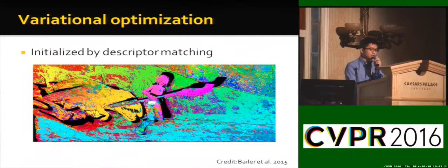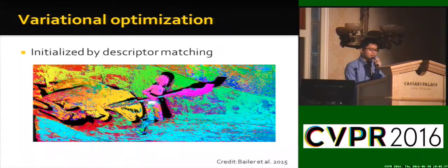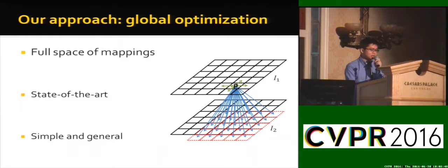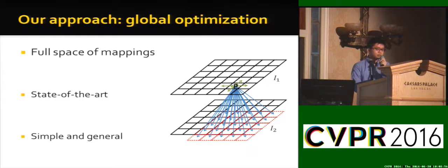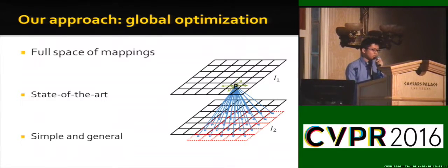Our approach globally optimizes a classical Horn-Schunck type objective with large displacement. The matching module is trained separately and can produce suboptimal initialization. Our approach globally optimizes over discrete grids, forming a chain from tens of thousands of nodes, and our regular grid formulation achieves state-of-the-art performance.